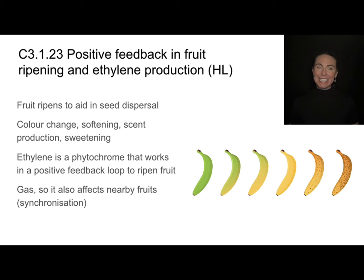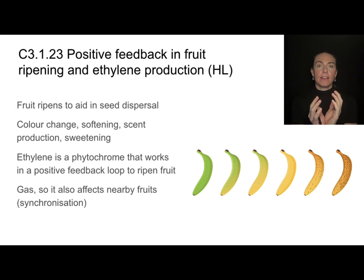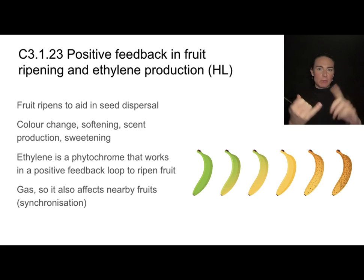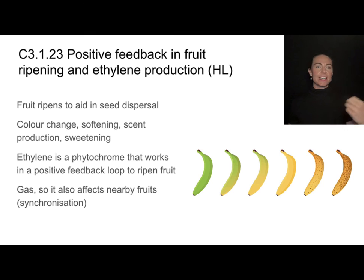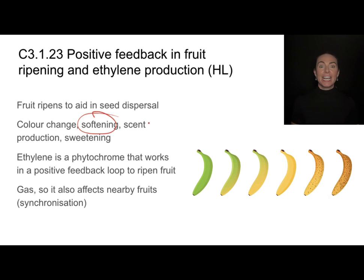Growth isn't the only thing that needs to be coordinated. Flowering plants also produce fruit, and that fruit needs to ripen so that the seeds inside can be dispersed. Parents don't want to compete with their offspring for space, water, sunlight, etc., so seed dispersal is a huge advantage. In order for fruits to be tempting for animals to eat and disperse the seeds, the fruit needs to ripen — signaled by a change in color, becoming softer, smelling nice, and becoming sweet.